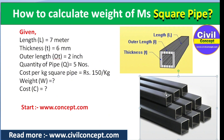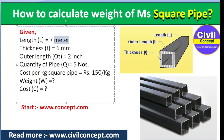We have the given dimensions: the length of a single square pipe is 7 meters, and the thickness is 6 mm. This is the MS square pipe — you can see the inner wall and outer wall, and the distance between them is 6 mm. The outer length is 2 inches, and the quantity of pipes is 5 in total.